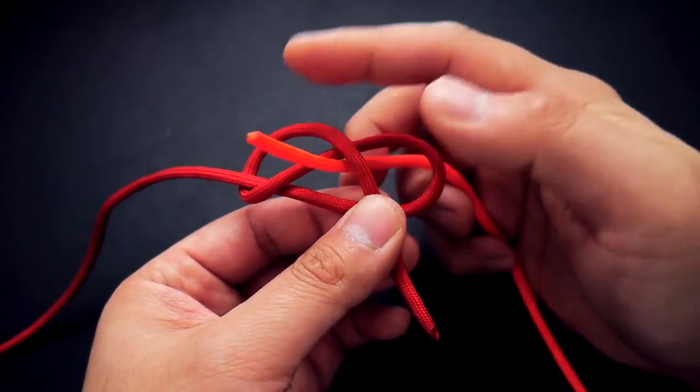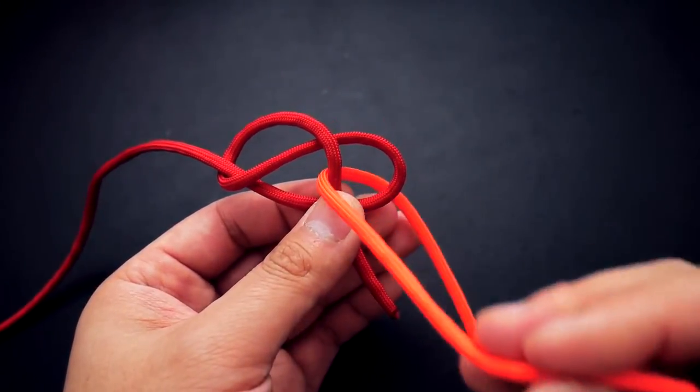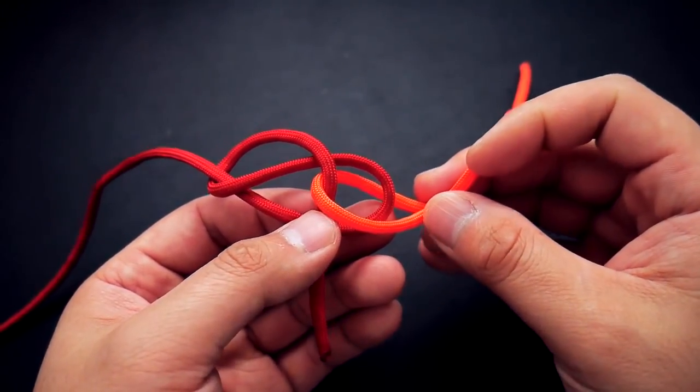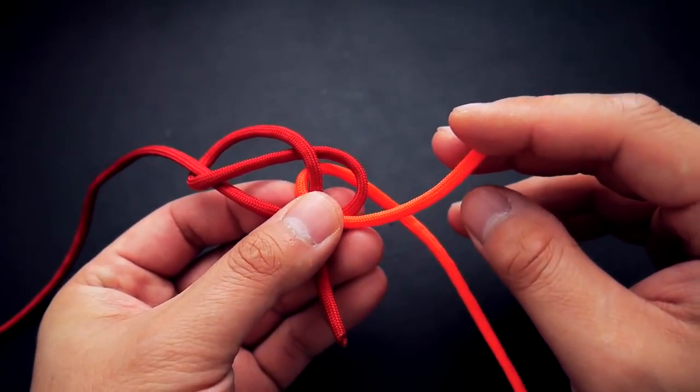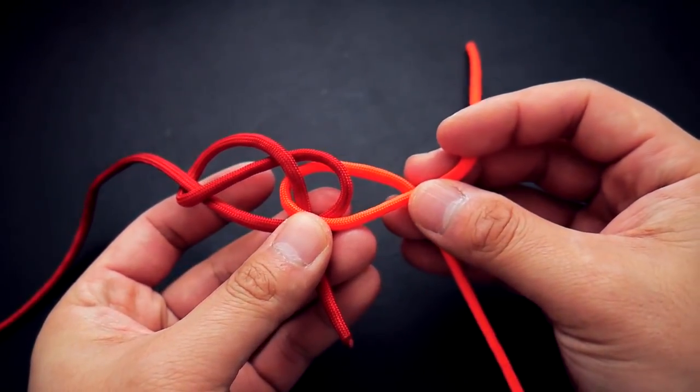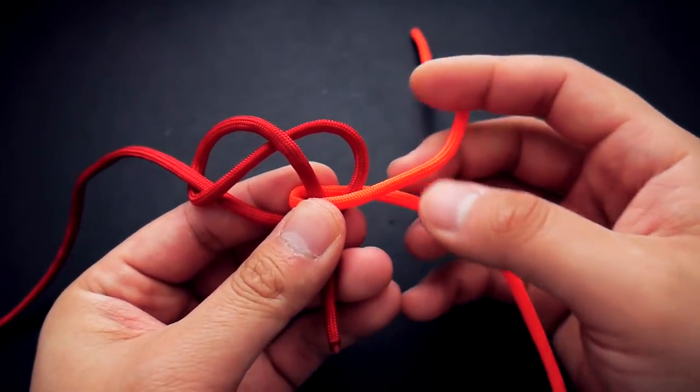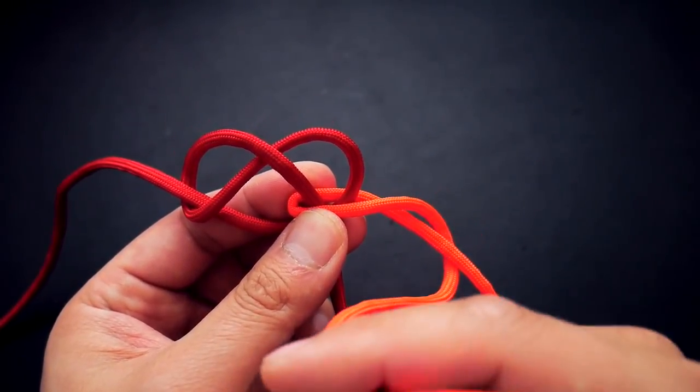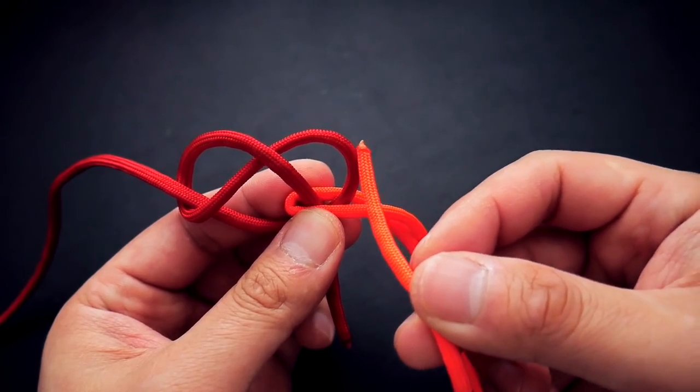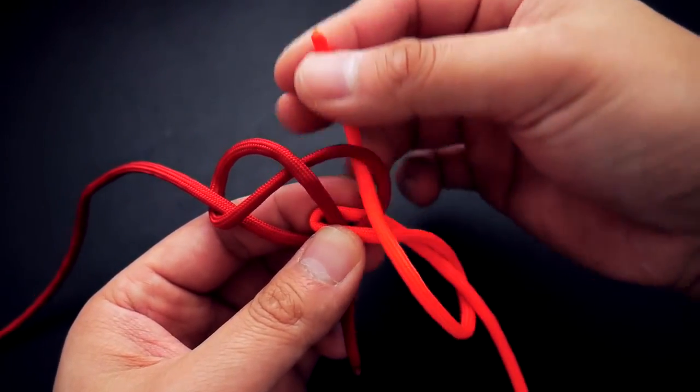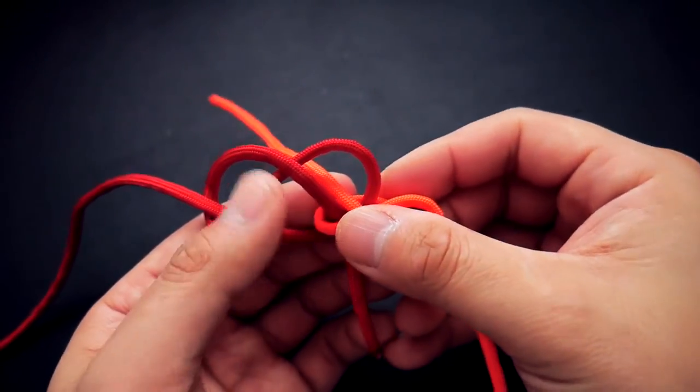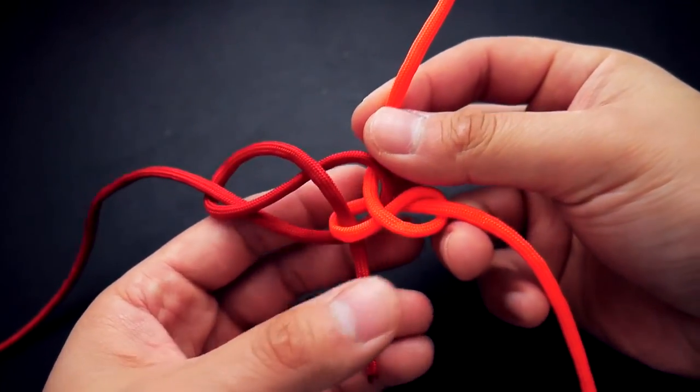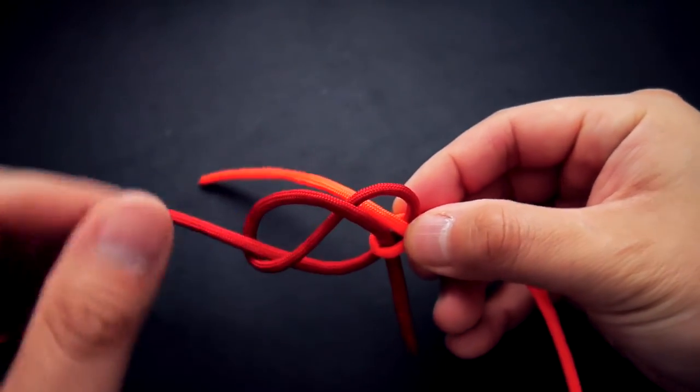Now I'm going to take my second cord, feed it through that triangle in the middle from behind, and bring it forward. Again, I'm going to do an overhand loop, this time pointing upwards. With that overhand loop pointing up, I'm going to take that same working strand, bring it back down behind, and go through the loop furthest to the right. From here you should have what looks like this.